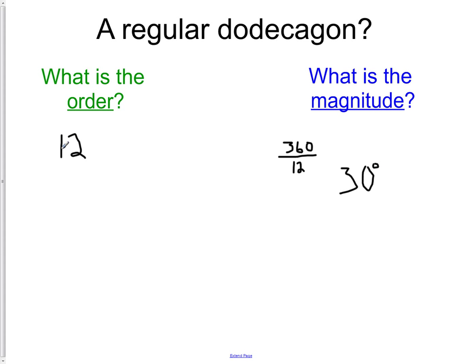So we have an order of 12, which is how many times the object lands back on itself as you go one time around. And then we have the magnitude, which is how far does it have to turn or rotate the first time before it lands back on top of itself. That is magnitude and order.